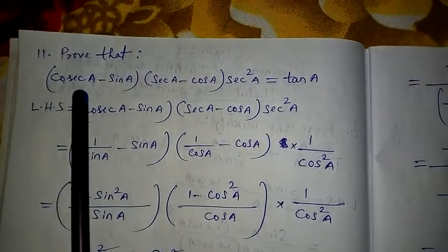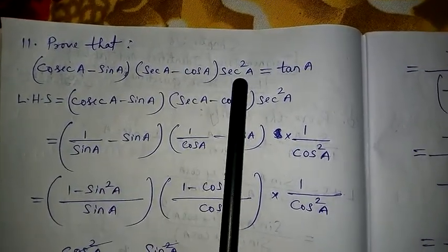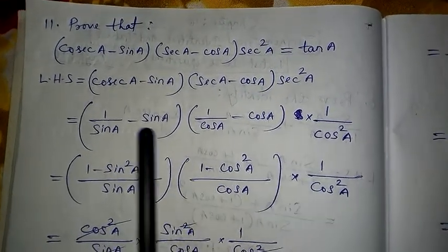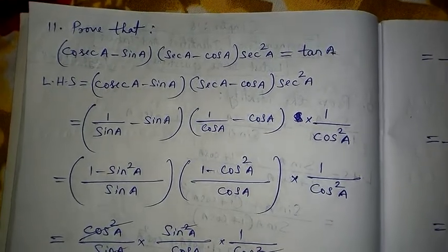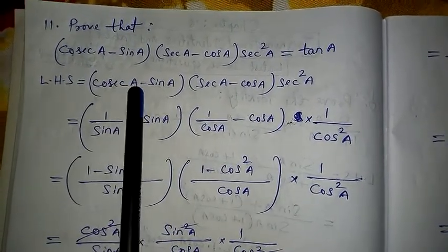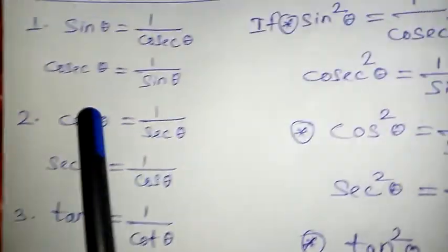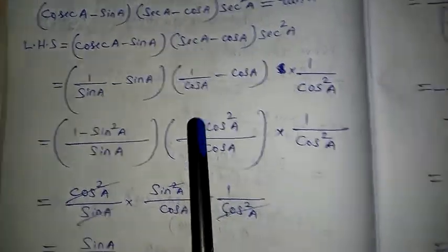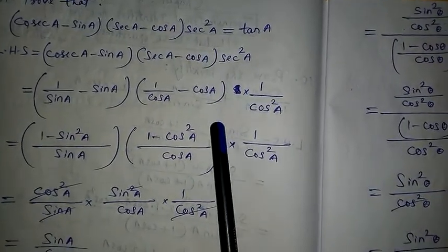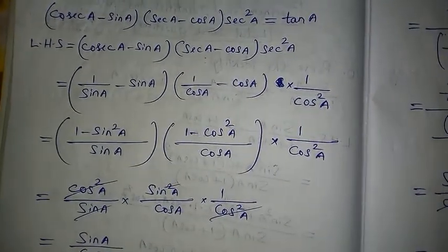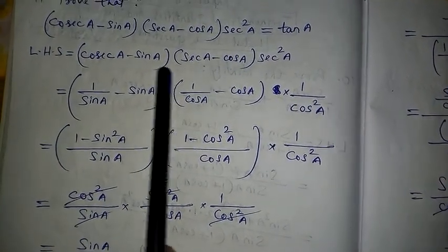Second question: prove (cosecA − sinA)(secA − cosA) · sec²A = tanA. I wrote the LHS. As I told you, try to make all identities in sin or cos. The sinA and cosA terms are already fine. Convert cosecA = 1/sinA, secA = 1/cosA, and sec²A = 1/cos²A. Now every identity is in sin or cos — that is the target of this chapter.